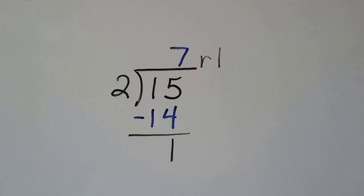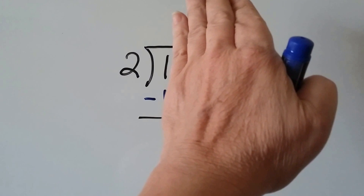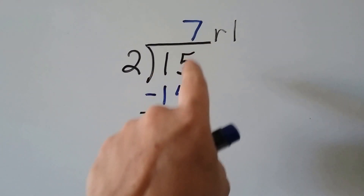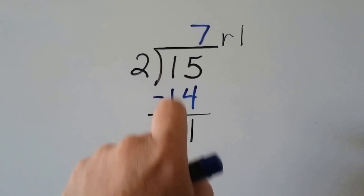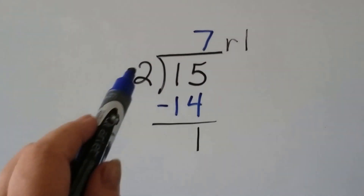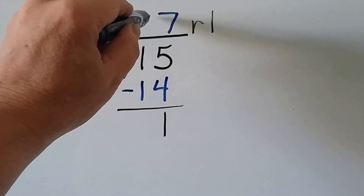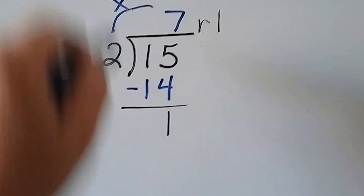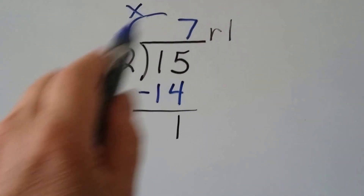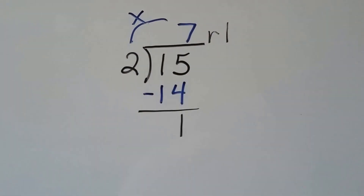2 goes into 15 — how many times? Can the 2 fit into the 1? Nope. So our answer is going to go above the 5, because it won't fit into 1, so we're going to have to fit the 2 into the 15. 2 goes into 15 seven times, because 2 times 7 is 14. We multiply this and subtract it. We have 1 left over, so we have a remainder of 1.